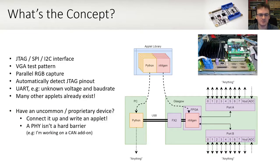JTAG, SPI and I2C interfaces are all supported, and you can even produce a VGA test pattern. You can capture single frames from parallel RGB interfaces, and you can detect unknown JTAG pinouts. You can even interface with a UART with an unknown voltage and unknown baud rate. I really encourage you to take a look at the long list of applets in the GitHub repo. We can probably connect with many unknown or proprietary interfaces — just connect it up and write an applet.